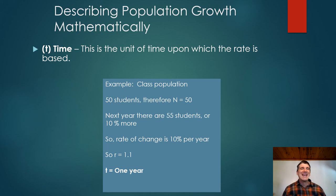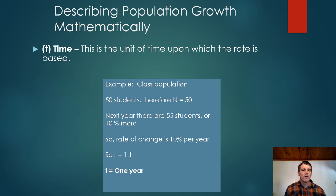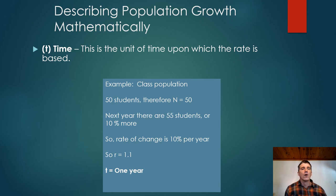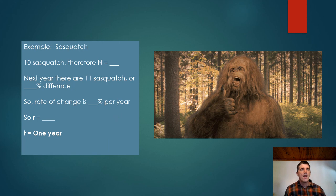Along with N and R, we have T, which denotes time — the unit of time on which our rate of growth is based. In our student example going from 50 to 55 students, we're talking about a year's difference, so T equals one year. To summarize: if we had 50 students, N equals 50. If the next year we have 55 students, that's 10% more, so R equals 1.1. Taking 1.1 multiplied by 50 gives us 55, and the time period is one year, so T equals one year.